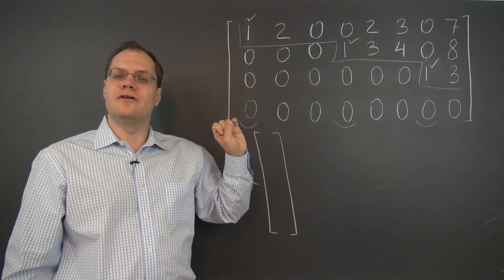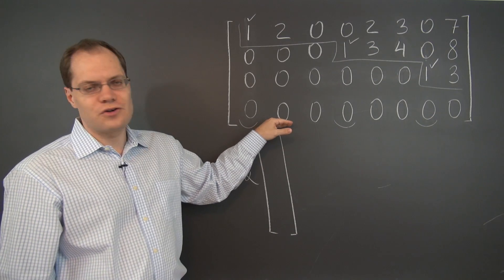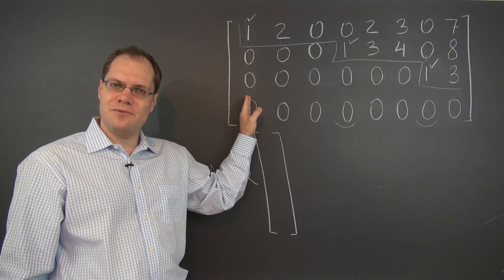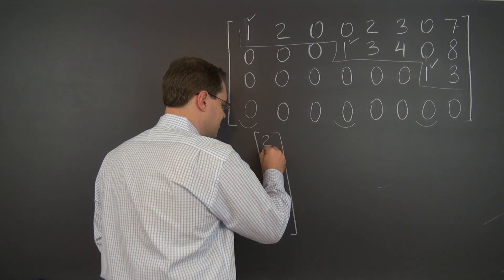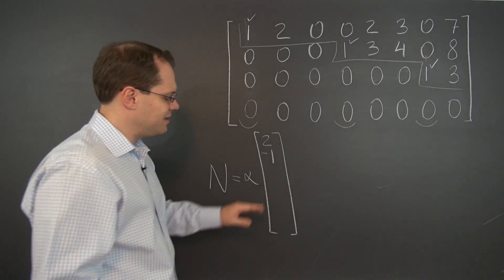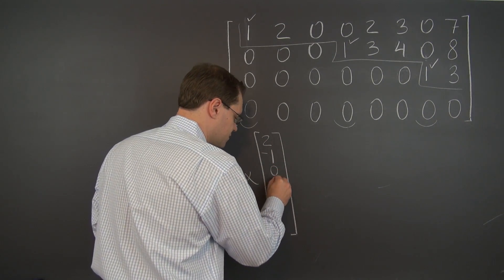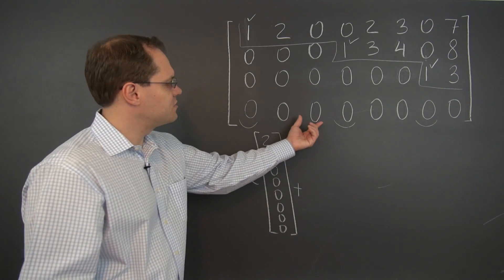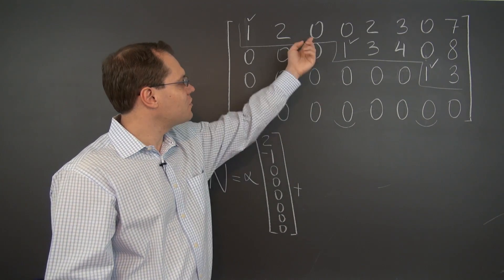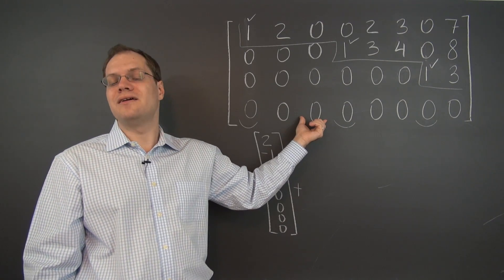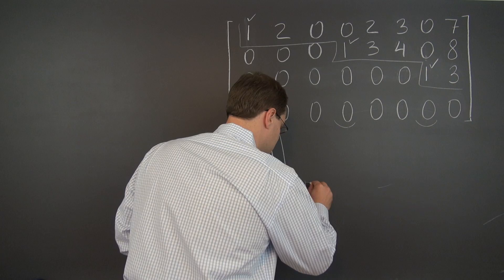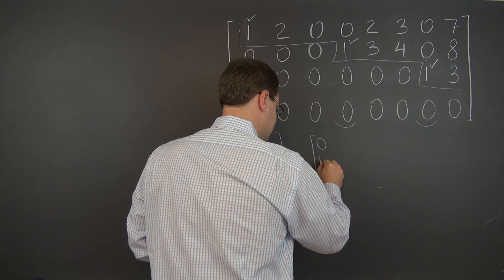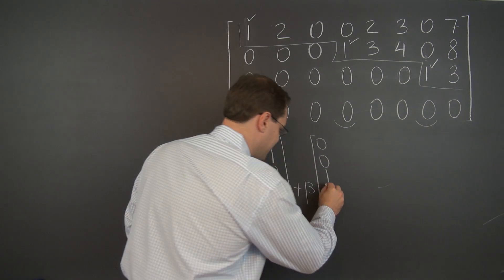The first element of the null space comes from the first non-pivot column of this matrix, which is twice the first pivot column, and therefore the corresponding element in the null space is two, negative one, followed by six zeros. The second element of the null space comes from the second non-pivot column, and reflects the fact that this non-pivot column is the zero column, which simply puts a one in the corresponding location, followed by five zeros.